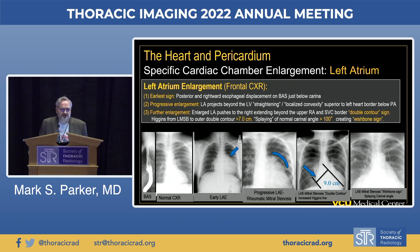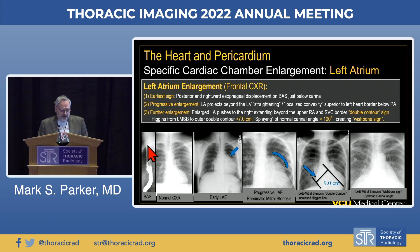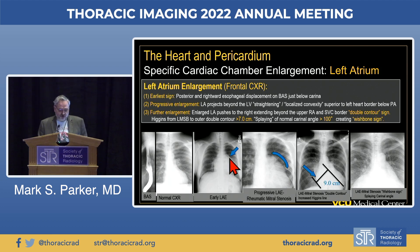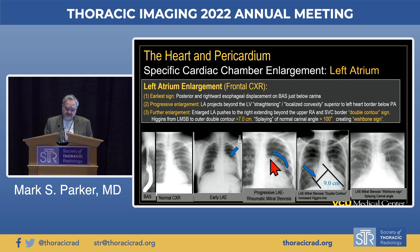Left atrial enlargement is responsible for a whole host of radiologic signs. One of the earliest is seen on a barium swallow examination, where the barium column is displaced posteriorly and rightward just at and below the level of the carina. As the left atrial appendage—normally concave or straight—enlarges, it starts protruding beyond the margin of the left ventricle and pulmonary artery, eventually becoming fully convex with aggressive enlargement. It can also protrude into the right lung, creating a double density sign.